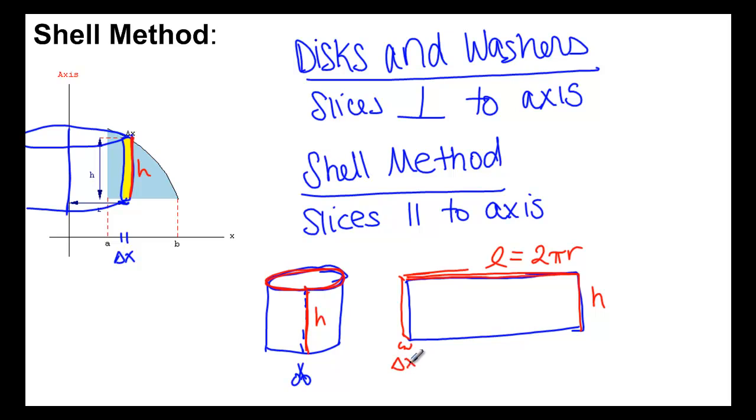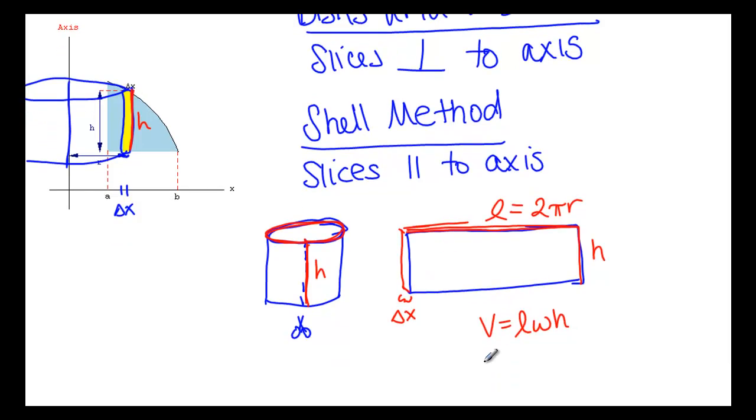So now that we have something that looks a lot more like a box, we can use volume equals length times width times height. Or, in this case, volume of one little slice, so we're going to call that ΔV.